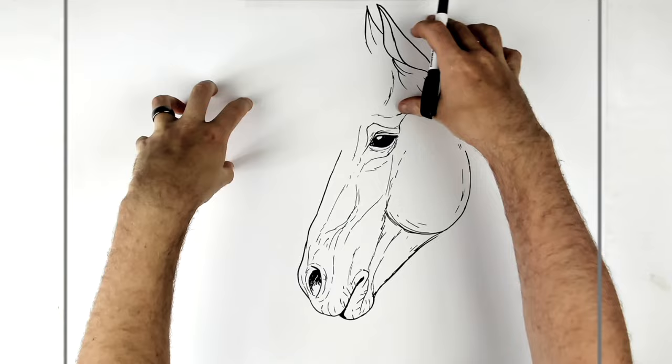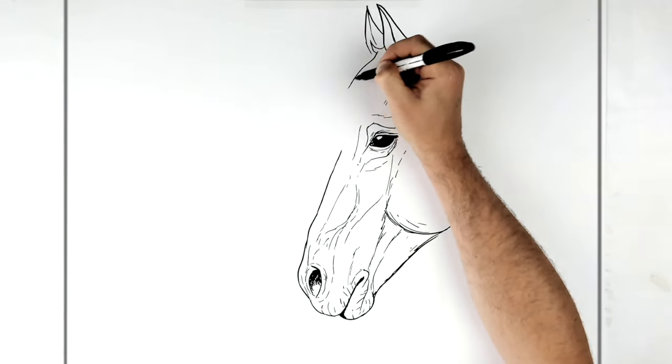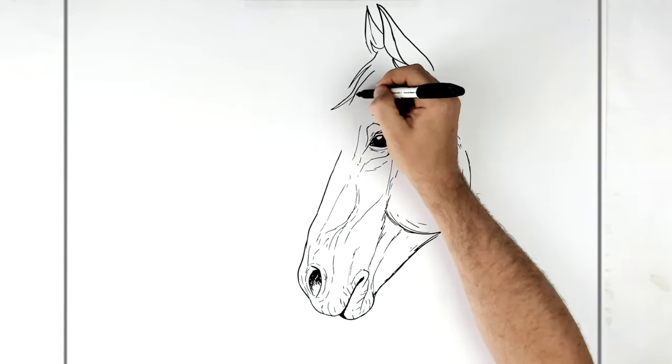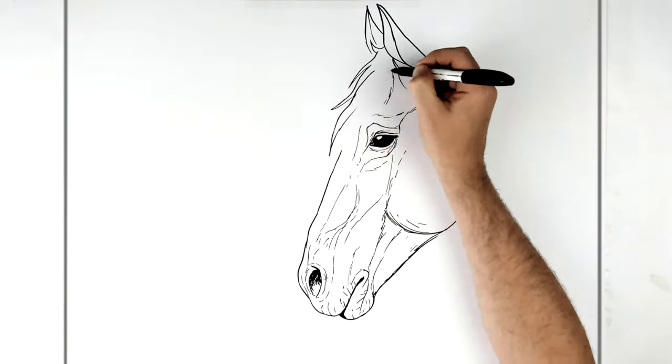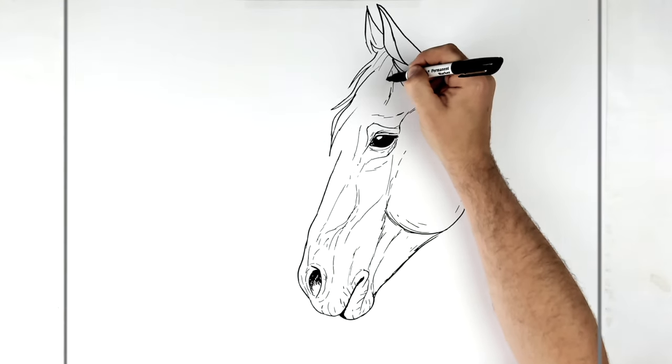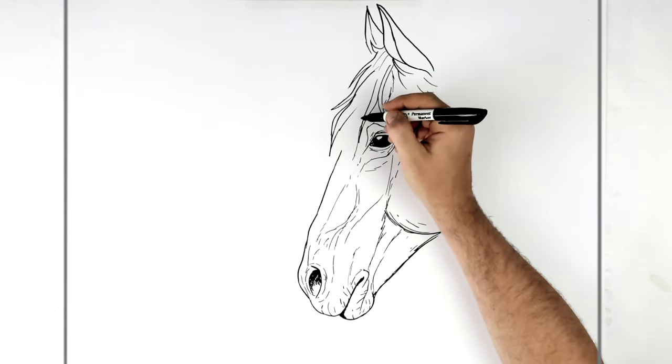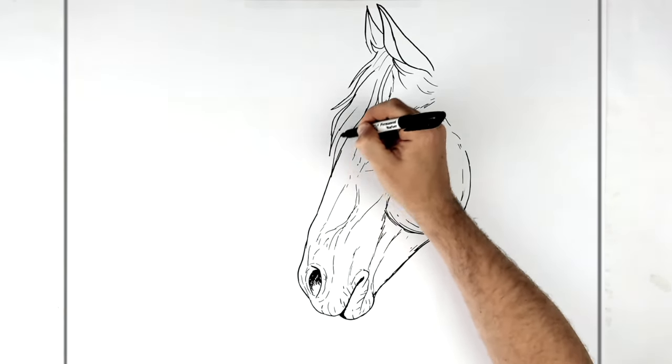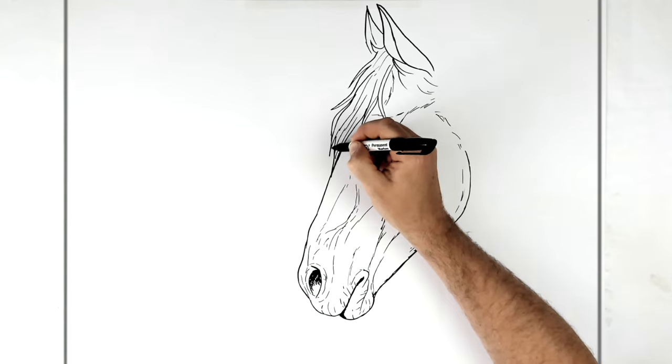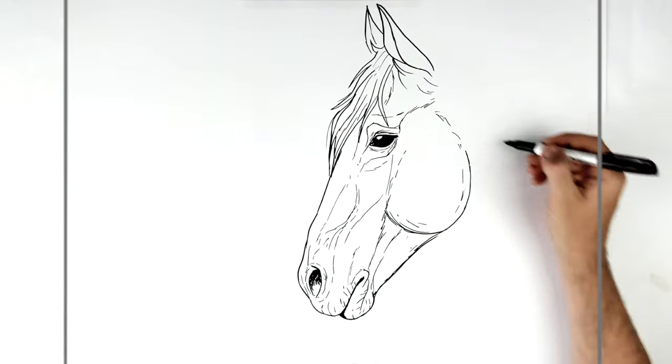So then we have a fringe going this way and a mane coming down this way. We'll do the fringe first. We'll just add like these hair spikes coming down here, coming down over the face as well, depending on what type of hair you want to give it of course. We'll go for sort of semi-long, just coming down here. Right, like so.